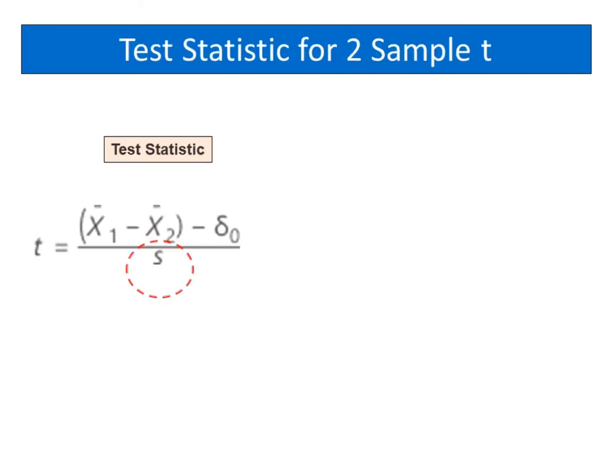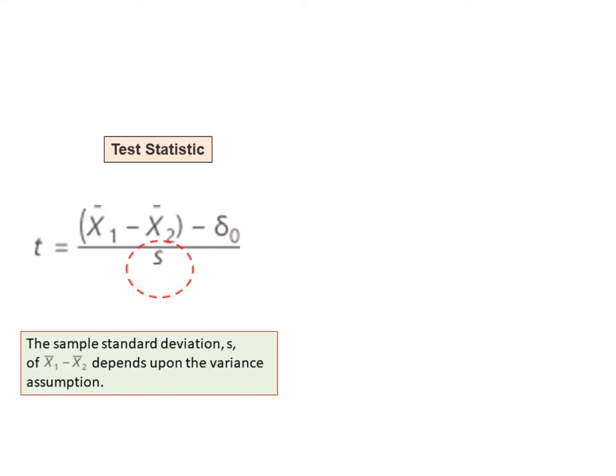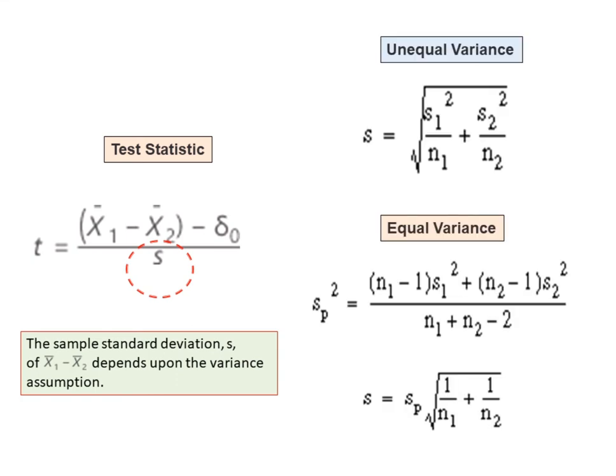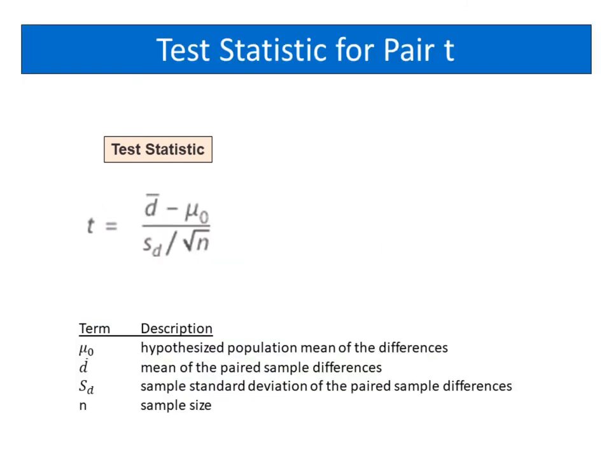The T value for two sample T test is the difference between mean of the first sample and second sample, minus the hypothesized difference between the two population means, then divided by sample standard deviation. The sample standard deviation, S, depends upon the variance assumption.